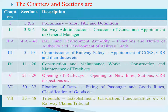Chapter 7: Tribunals has sixteen sections, Sections 33 to 48. They are mainly regarding the establishment, jurisdiction, and functionalities of RCT — that is, the Railway Claims Tribunal.